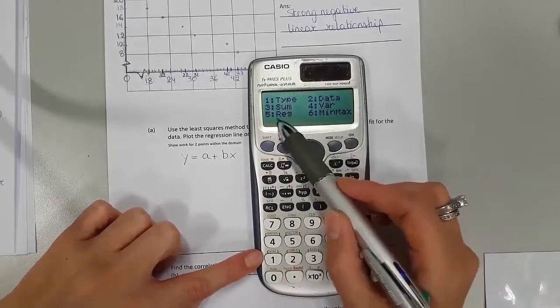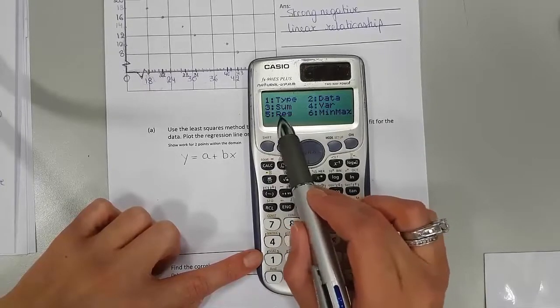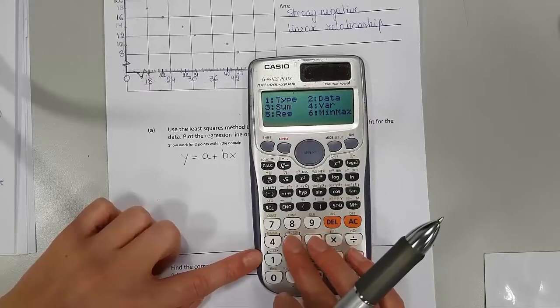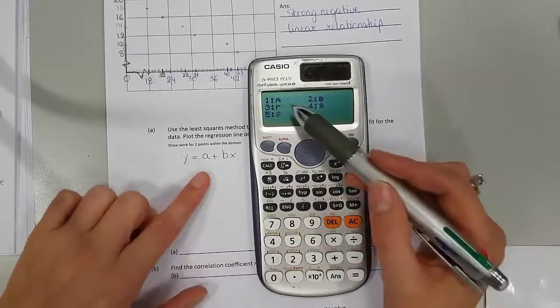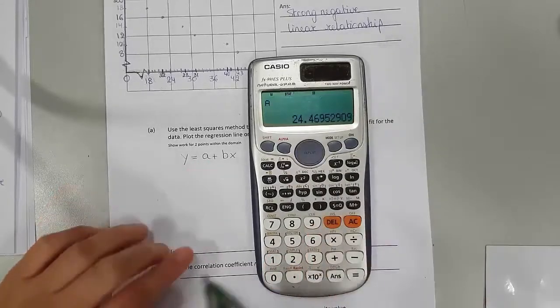Then press Shift 1 to go to statistics. Then it depends on which calculator you're using. In my calculator, regression is 5. In some calculators, regression is 7. Press 5 or 7. And then A, 1. This is your A.